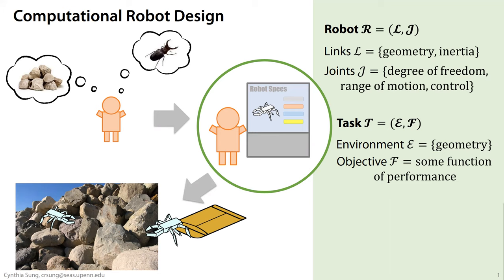In addition, if we want to design a robot for a particular scenario, we need to represent the task: an environment with geometry and physical quantities like friction or object mass, and an objective function representing the robot's performance — such as error from a desired trajectory or ability to pick up an object of a certain mass. At the end of the day, the problem we're trying to solve is an optimization: maximize objective f over the space of possible robot designs, subject to physics.